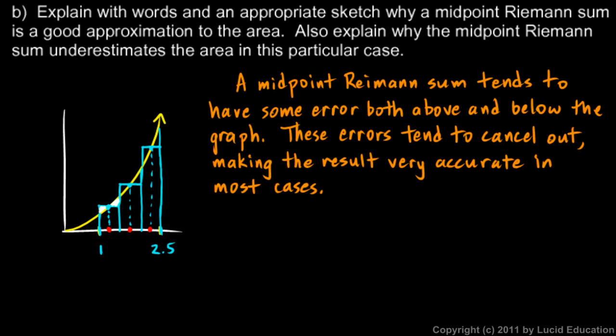And then there's one more part to this question. We're told to explain why the midpoint Riemann sum underestimates the area in this particular case. And so the key to understanding this involves looking at the top of one of these rectangles. Any one of them will do.